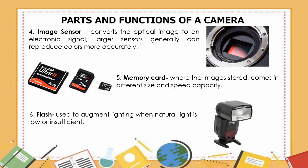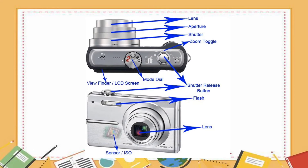Number six is the flash — it is used to augment lighting when natural light is low or insufficient. Here are the different parts of a camera shown in a diagram: we have the lens, the aperture, the shutter, the zoom toggle, the shutter release, the mode dial, the viewfinder or LCD screen, the flash, and the sensor or ISO.